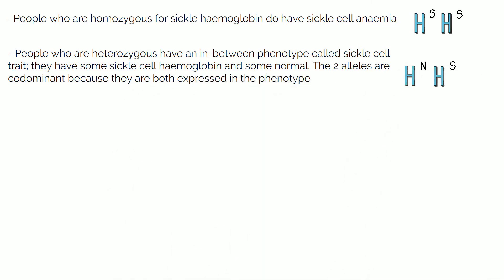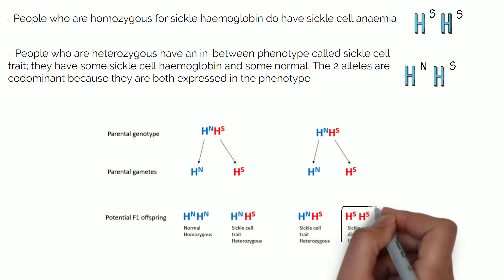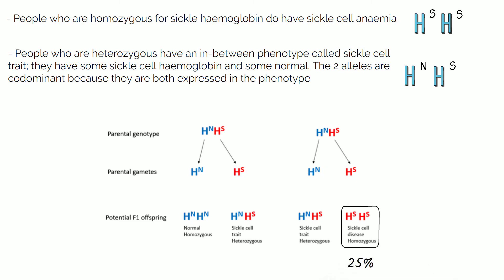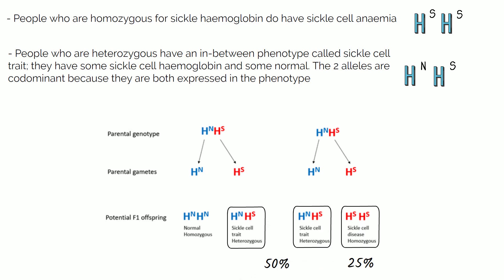The diagram shows the possible outcomes of crossing two heterozygous individuals with sickle cell trait. There is a 25% chance of sickle cell disease, 50% chance of sickle cell trait, and 25% chance of normal haemoglobin.